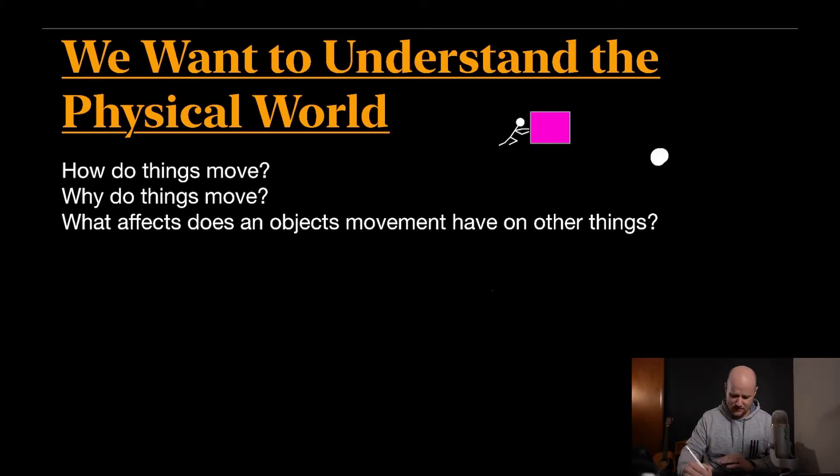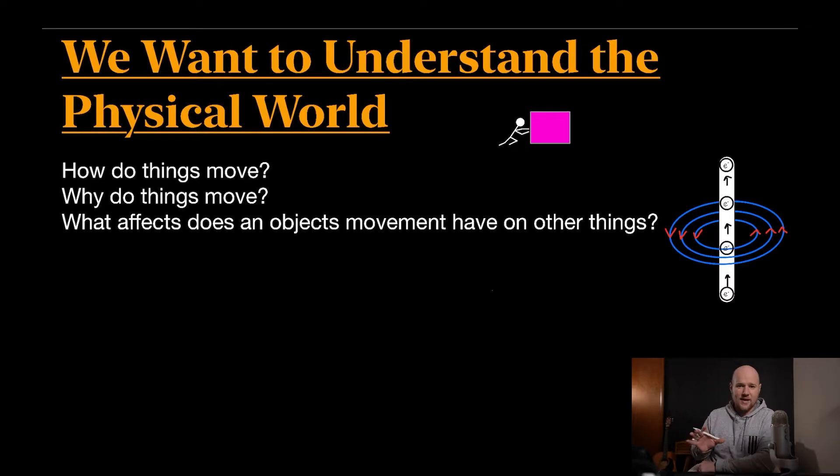And what I mean by that is over here on the right I have a wire with electricity flowing through it. And if you see, electricity is flowing through the wire in one direction, it creates a magnetic field around that wire. And it's called the electromagnetic effect. And that's one of those examples of if one thing is moving, how does it affect something else? So the electricity moving affected the magnetic field around it, which is pretty interesting. So you notice that they really ask a lot of questions of: how do things move? Why do things move? And what is the cause and effect of something moving?